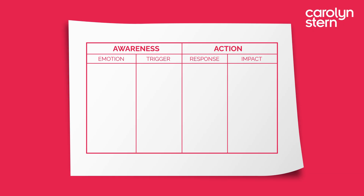When you received the snarky email, you felt angry — so write down 'anger' in the Emotion column. Ask yourself: why did I feel angry? What caused the anger? Well, the trigger was the snarky email, so write down 'snarky email' in the Trigger column.